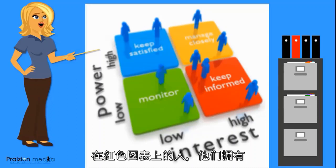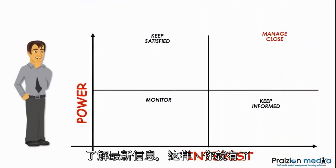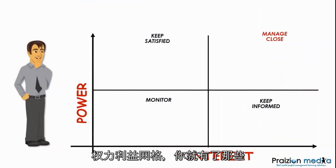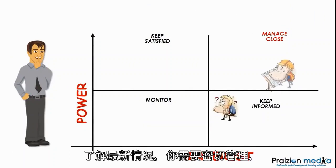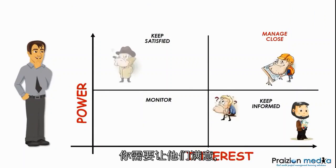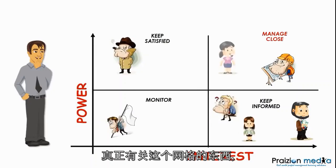And those that are on the red pod, they've got a high level of interest — we need to keep those folks informed. So you've got your power interest grid: those stakeholders that you need to keep informed, those you need to manage closely, those you need to keep satisfied, and those you need to monitor. And that's really what this grid is all about.